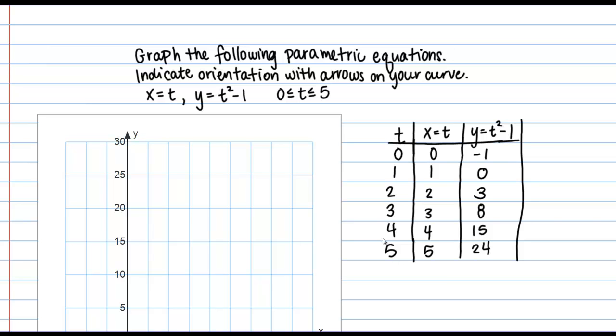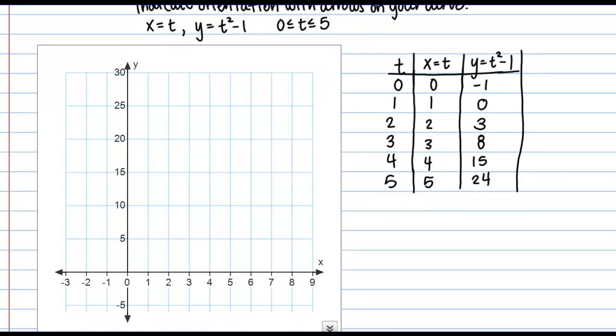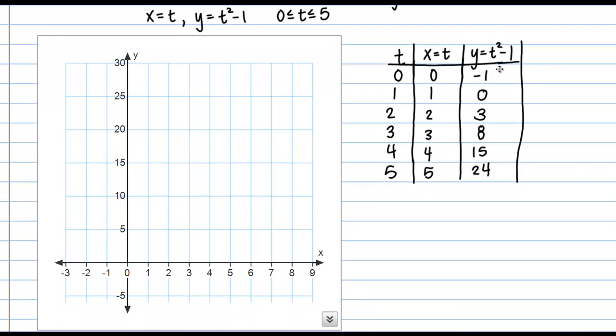Okay, so what this is done is now I have a set of x, y points that I can graph. So let's go ahead and put those on our coordinate plane. Our first point here at time equals 0 is the point 0, negative 1. Okay, so somewhere approximately here.